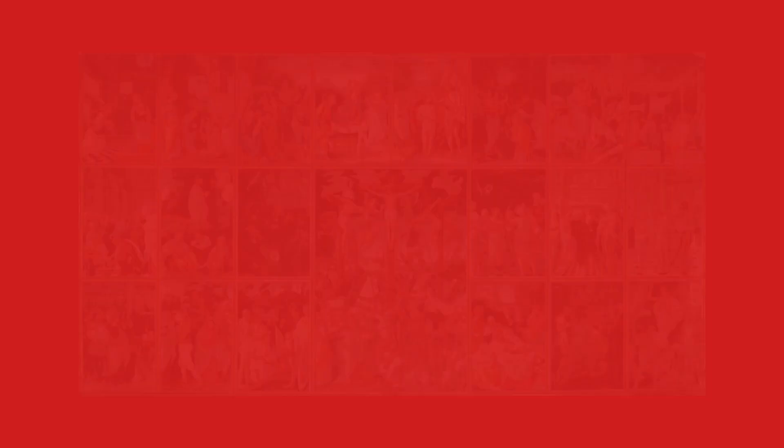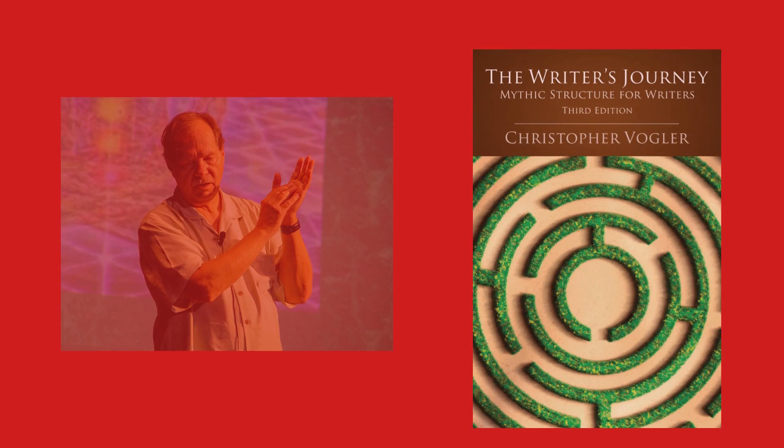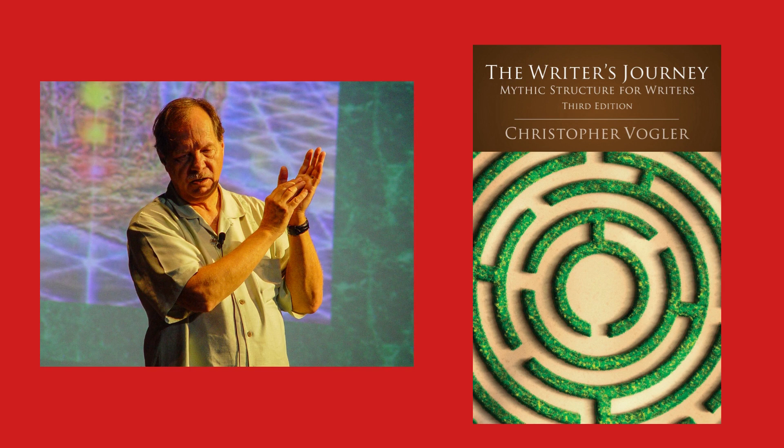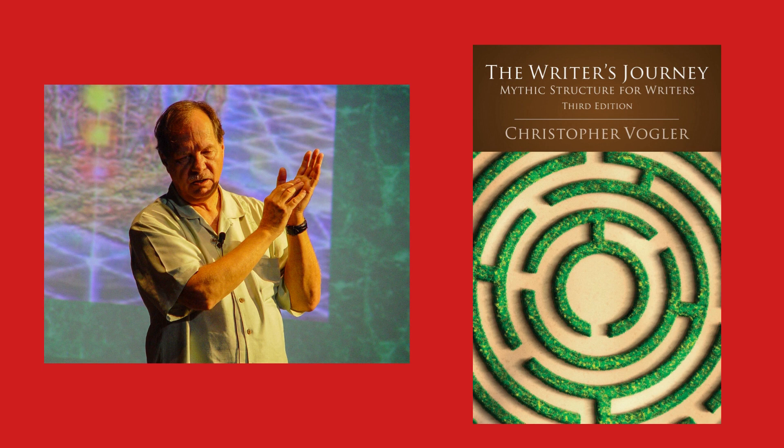It's easy to find similarities between Leeming's hero pattern and the story of Jesus Christ, along with Lord Raglin's hero pattern as well. Their paradigms reveal a more mythological take on the hero's journey. One of the most recent adaptations comes from Christopher Vogler, a Hollywood development executive and writer who worked with Disney in 2007 and developed The Writer's Journey: Mythic Structure for Writers, originally published in 1992.